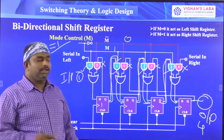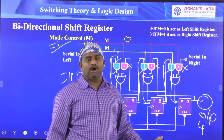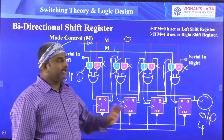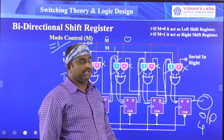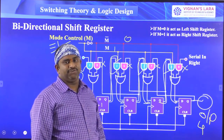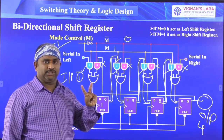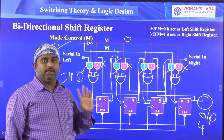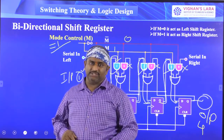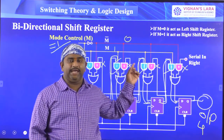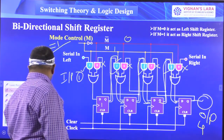The data is shifting from left to right. When the data moves in the right-side direction, this is called a shift-right register. So M equal to 0 acts as a left shift register, and M equal to 1 acts as a right shift register. This is the bidirectional shift register — it has two directions: left to right and right to left. Everyone should know this diagram.